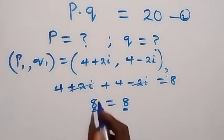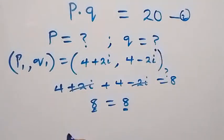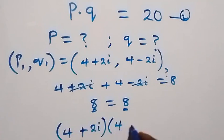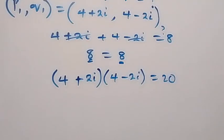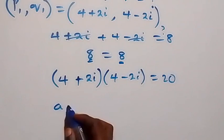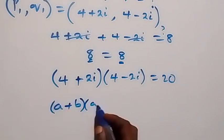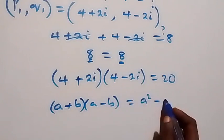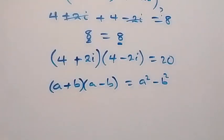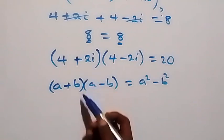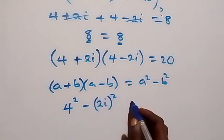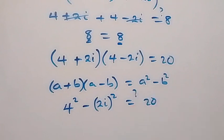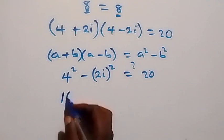For equation 2, we substitute the values of p and q and check if p times q equals 20. We have (4 + 2i) times (4 − 2i) equals 20. Comparing with the identity (a + b)(a − b) equals a squared minus b squared, we identify a as 4 and b as 2i. So we can write this as 4 squared minus (2i) squared equals 20.